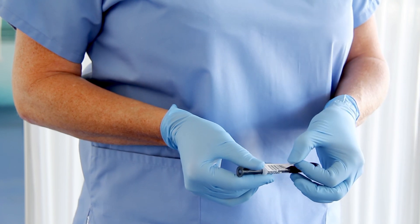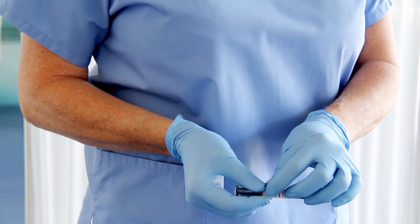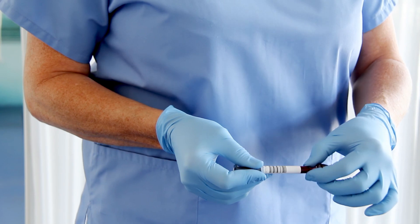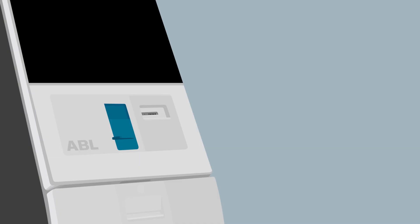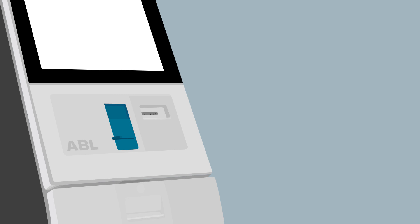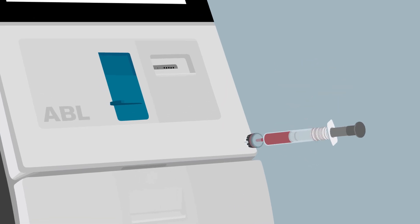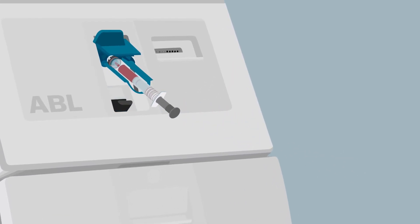Label the syringe with the patient ID and immediately transport the sample to the ABL blood gas analyzer. Enter the patient and sample ID into the ABL analyzer to ensure that the results are linked to the right patient. Mix the sample again to ensure that it is homogenous and place the syringe in the inlet to aspirate the sample.